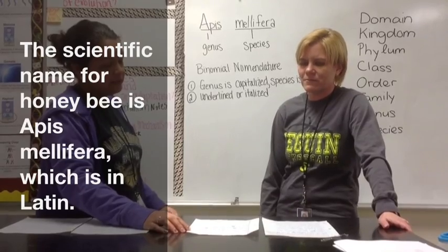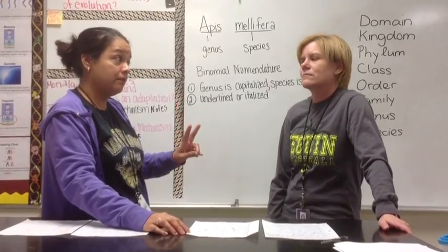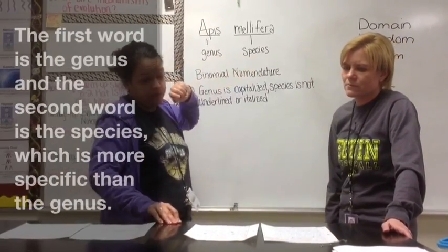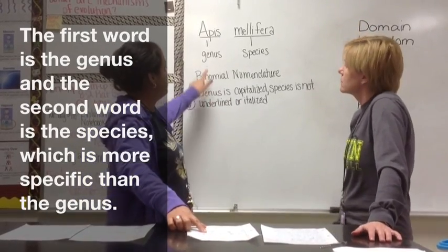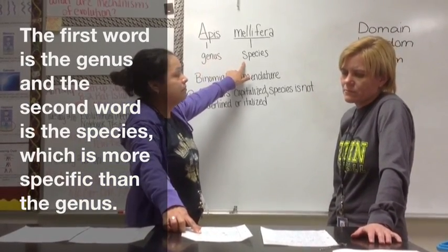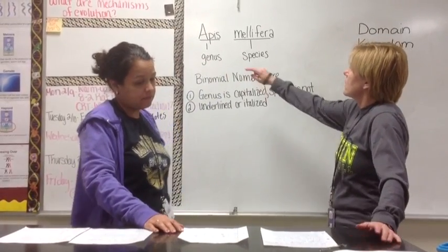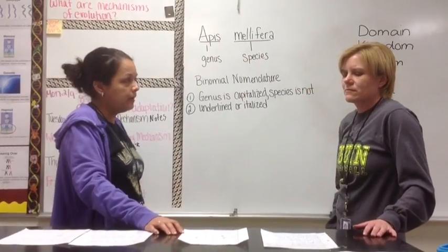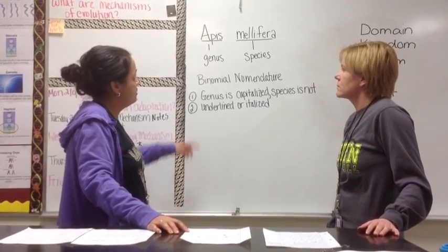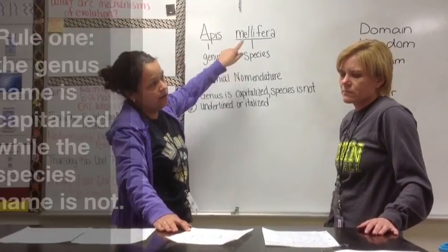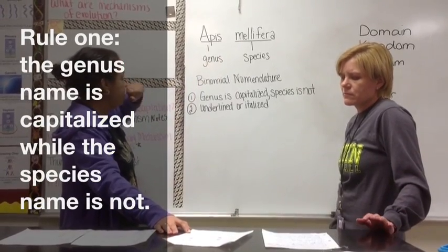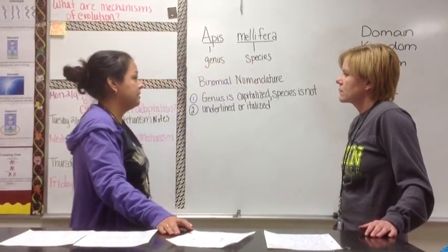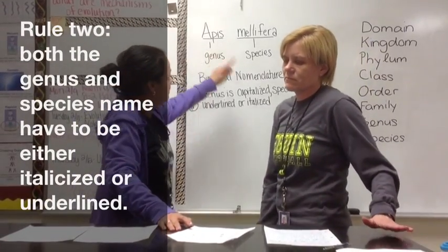Binomial nomenclature consists of a two-word naming system. The first word is called the genus and the second word is called the species. In our example, 'Apis' would be the genus and 'mellifera' would be the species. The genus is always capitalized while the species is never capitalized. There is also a second rule: the scientific name — Apis mellifera — either has to be underlined or italicized.